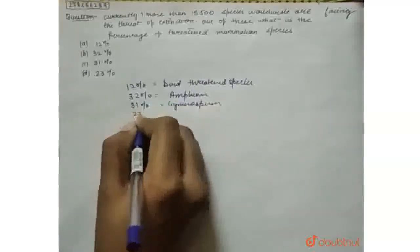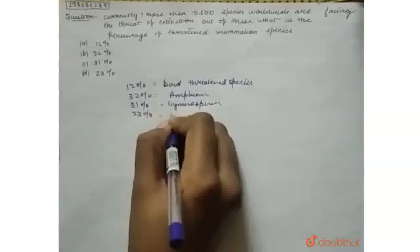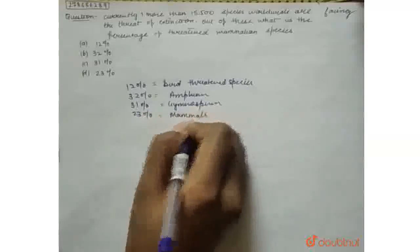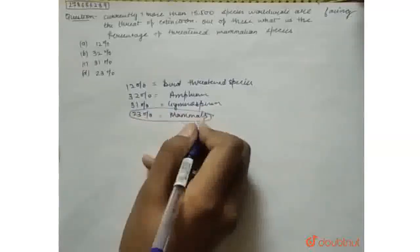So 23%, finally, is mammals ki threatened species. So 23% of all the mammals are threatened.